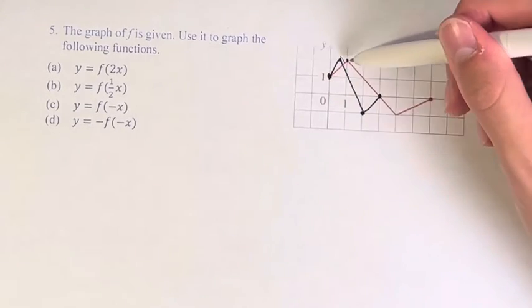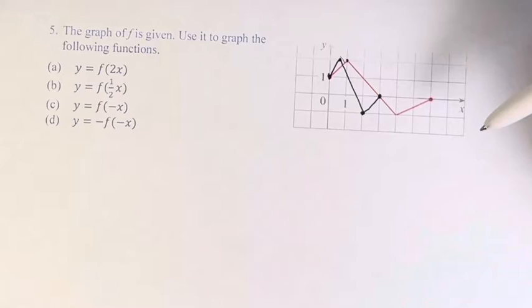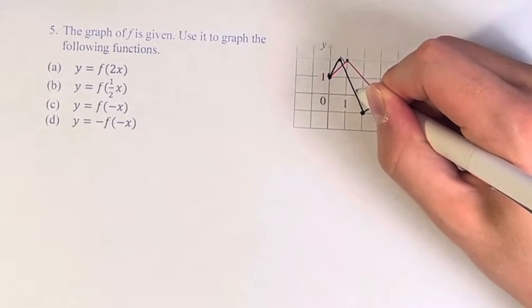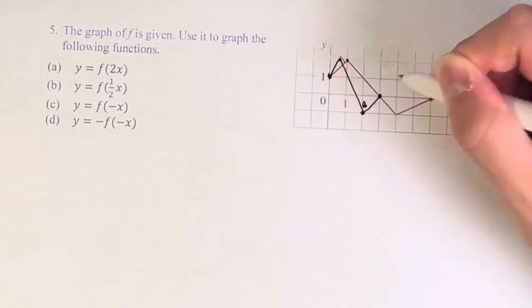And notice that I picked the end points of all these line segments because then you can just fill in between. So this right here is A. I'll write it right there.